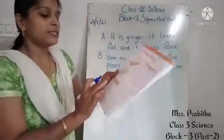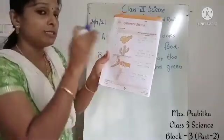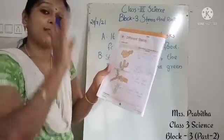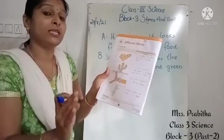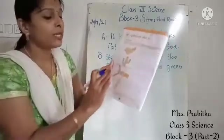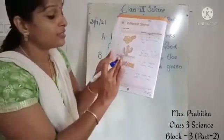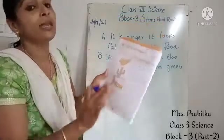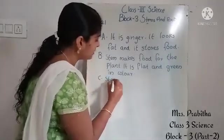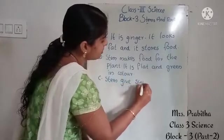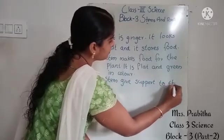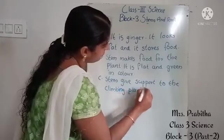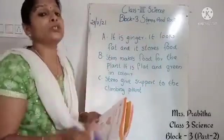Next, Picture C. Look at the picture — we can see one stem with some climbing plants on it. Climbing plants cannot stand straight; their stems are very weak, so they need the support of other plants. They climb on other plants. So the function of stem here: stem gives support to the climbing plant.